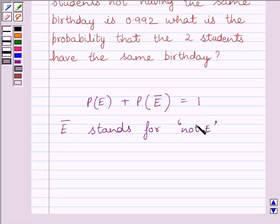Also, E and E bar are called complementary events. Or we can say E and not E are complementary events.